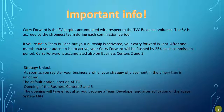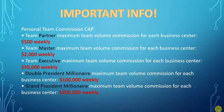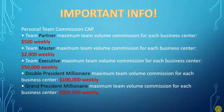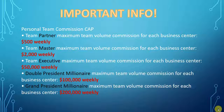Let's talk about the personal team cap. If you are a team partner, you're capped at $500 a week in your binary. If you are a master, you're capped at $2,000 a week. If you are an executive, you're capped at $50,000 a week. I can unequivocally say you need to either start out or upgrade to the executive level, because many of you are going to want to make more than $2,000 a week in the binary. At double president millionaire it's $100,000 a week, and at grand president millionaire it's $200,000 a week cap.